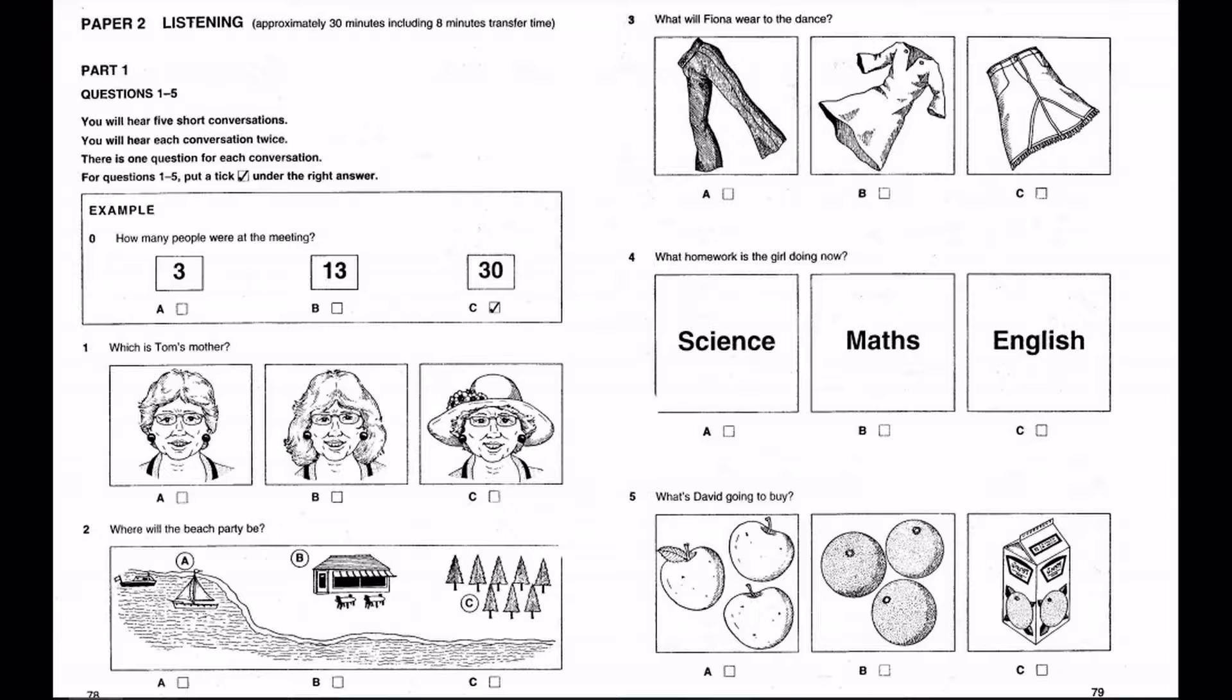Look at the instructions for part one. You will hear five short conversations. You will hear each conversation twice. There is one question for each conversation. For questions one to five, put a tick under the right answer. Here is an example.